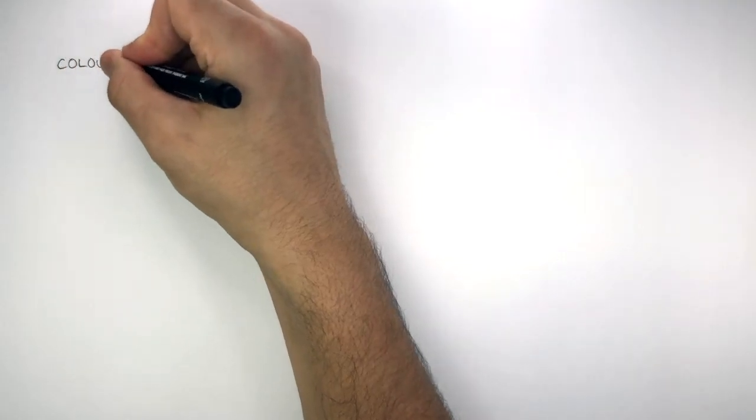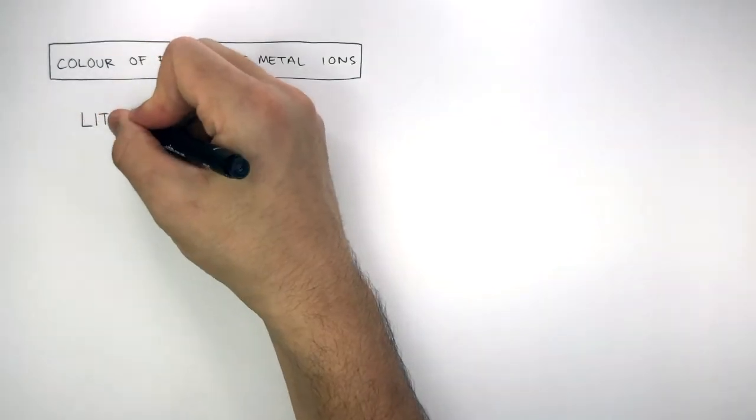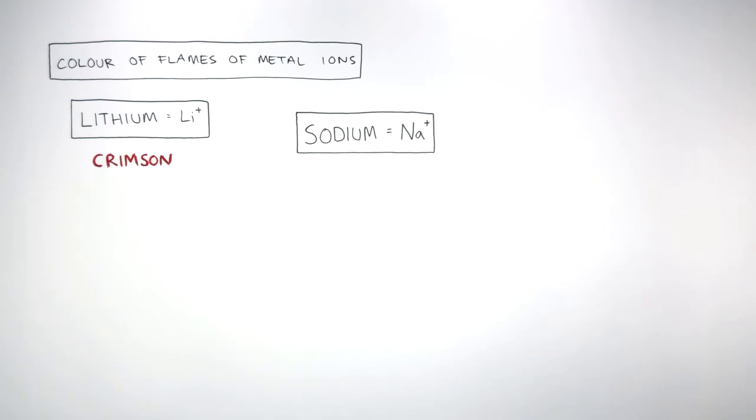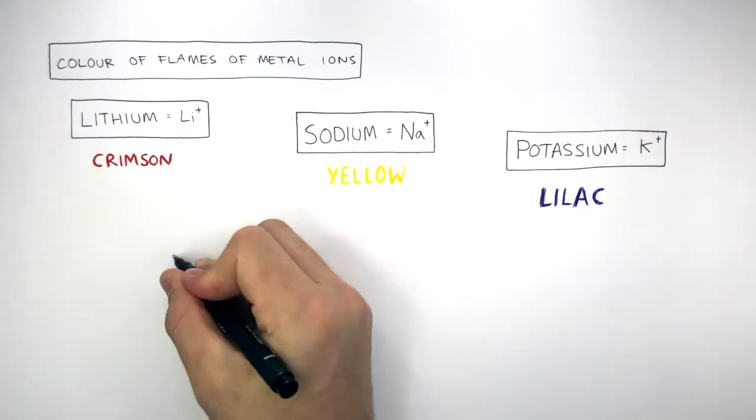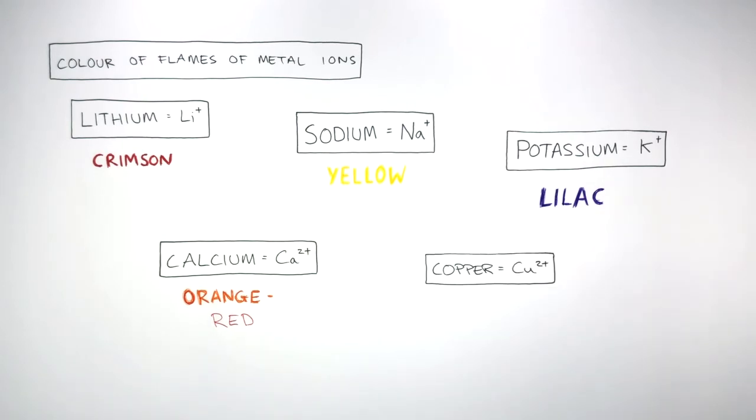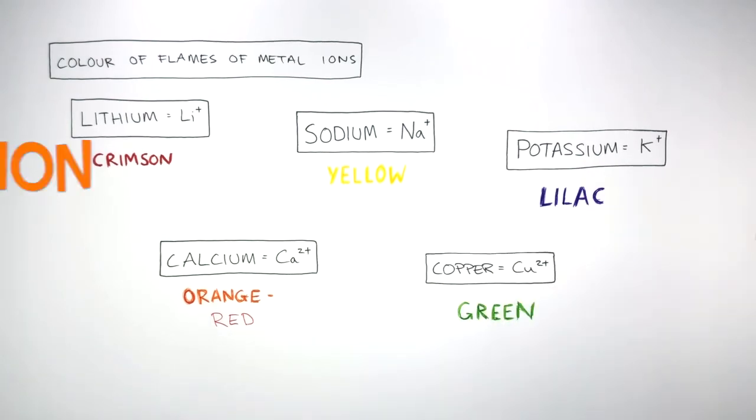The colour of flames of the metal ions are: Lithium Li+ is crimson, Sodium Na+ is yellow, Potassium K+ is lilac, Calcium Ca2+ is orange-red, and Copper Cu2+ is green. It's question time.